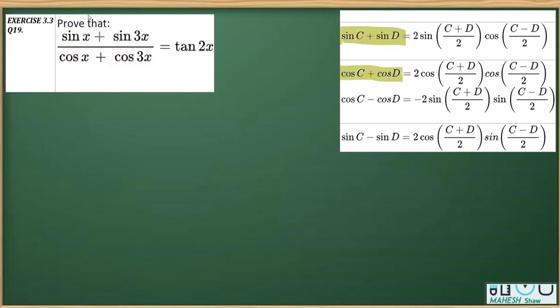So if I write down the numerator applying sine C plus D, sine C plus D is 2 sine C plus D by 2 and cos C minus D by 2. This is equal to 2 sine C plus D, C plus D is x plus 3x by 2, multiplied by cos C minus D by 2, that is x minus 3x by 2.